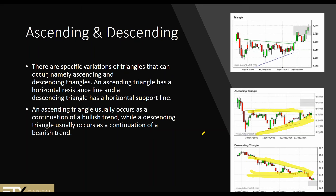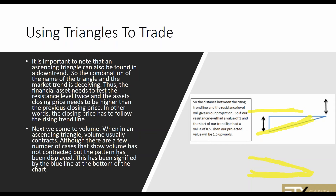There are slightly different interpretations of these. You can have both an ascending or a descending triangle in both an uptrend or a downtrend — they're known to appear in both. It's important to note that an ascending triangle can also be found in a downtrend, so the combination of the name of the triangle and the market trend is deceiving. The financial asset needs to test the resistance level twice, and the asset closing price needs to be higher than the previous closing — in other words, the closing price has to follow the rising trend line.